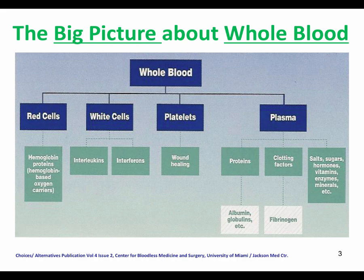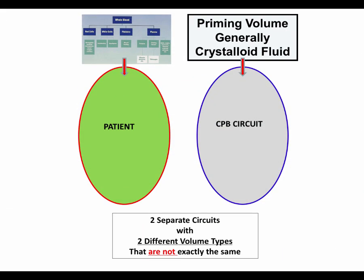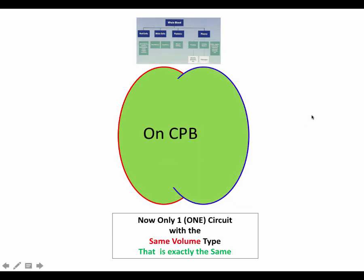Let's look at this in context of cardiopulmonary bypass. We have a patient consisting of his whole blood, and then we have a CPB circuit, which is generally filled with our crystalloid balanced electrolyte solutions. We have two separate circuits with two different volume types — they're not exactly the same. And then when we initiate bypass, we blend those two volumes together.